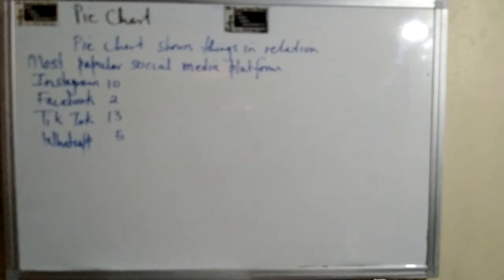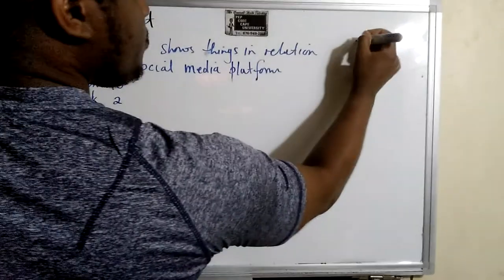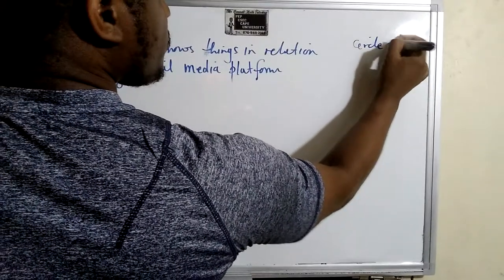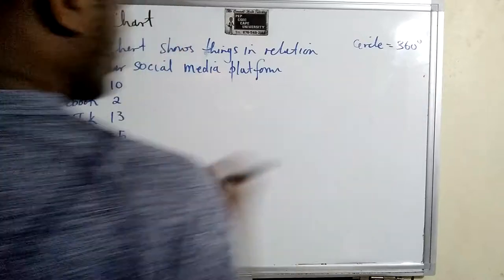So alright. So we are going to create a pie chart using this information. So let me just say 10, 12, 12, 25, 30. So we have a total of 30. So guys, a pie chart is represented in a circular form, right? It's a circle. And we know that a circle is equal to 360 degrees.